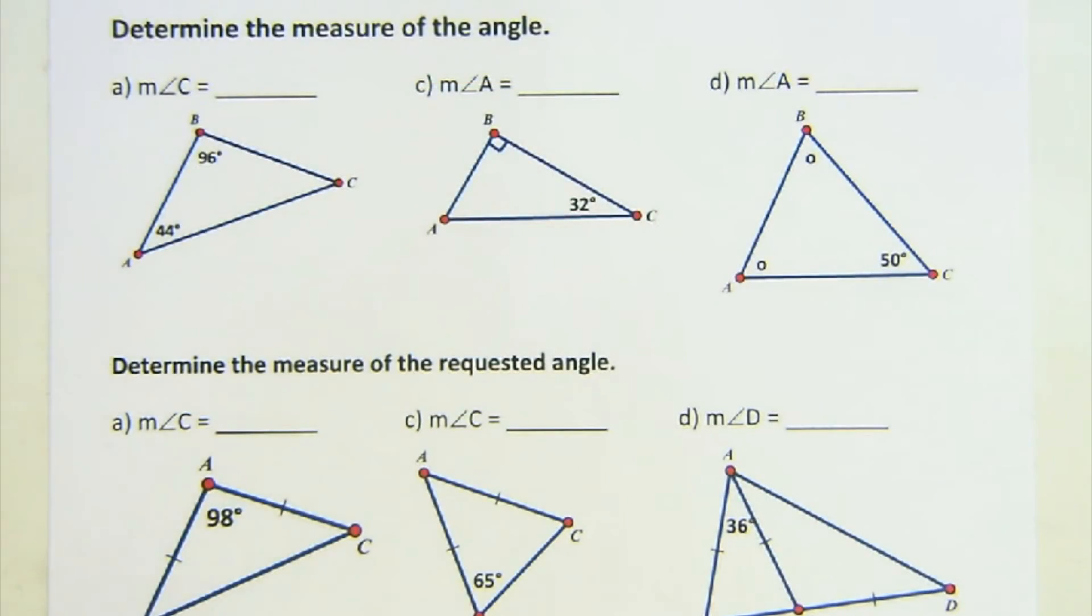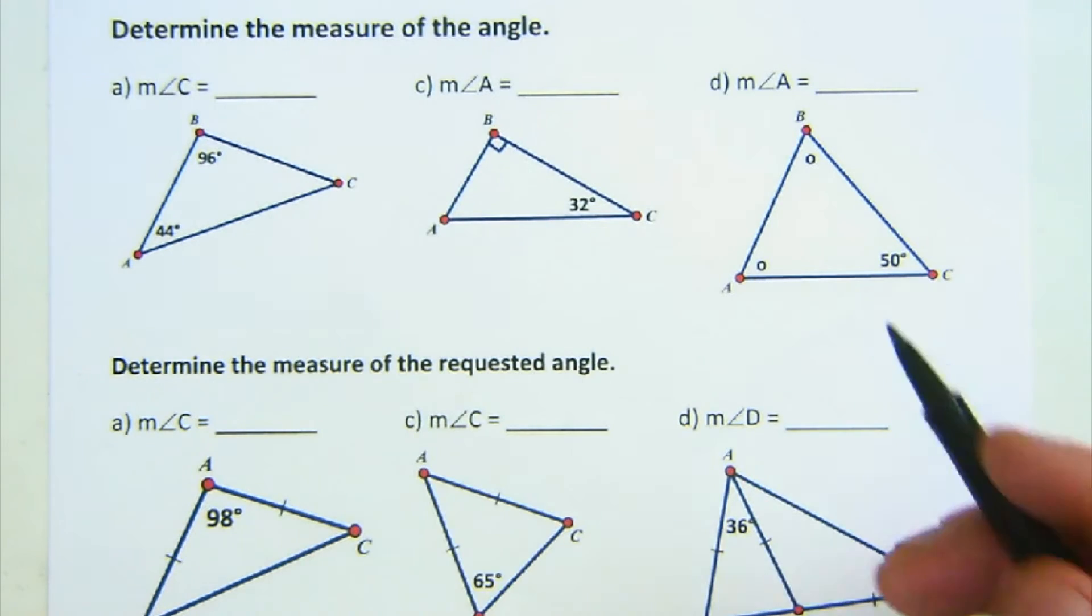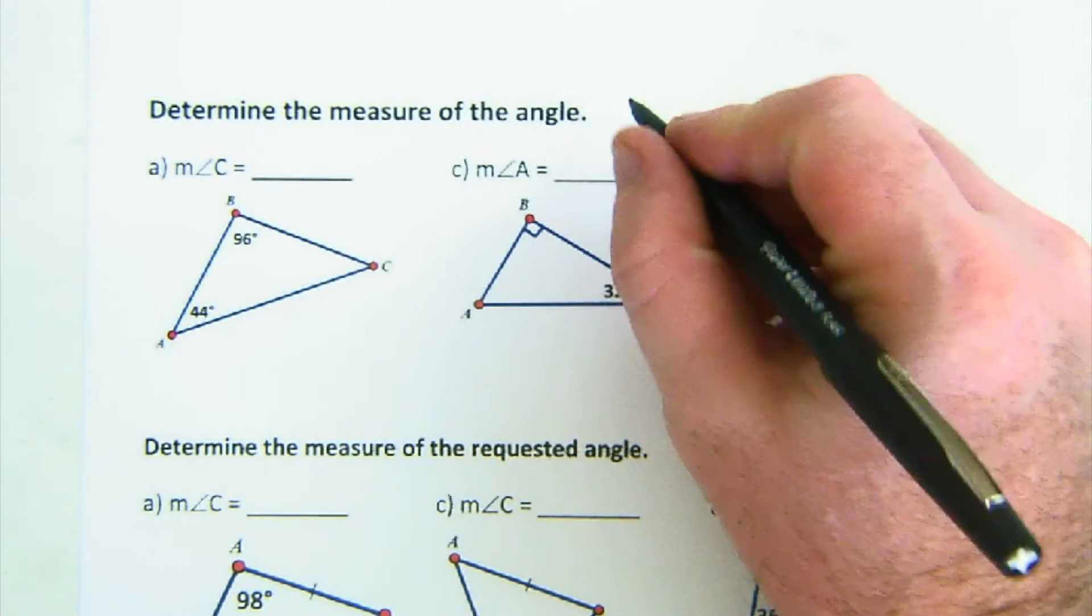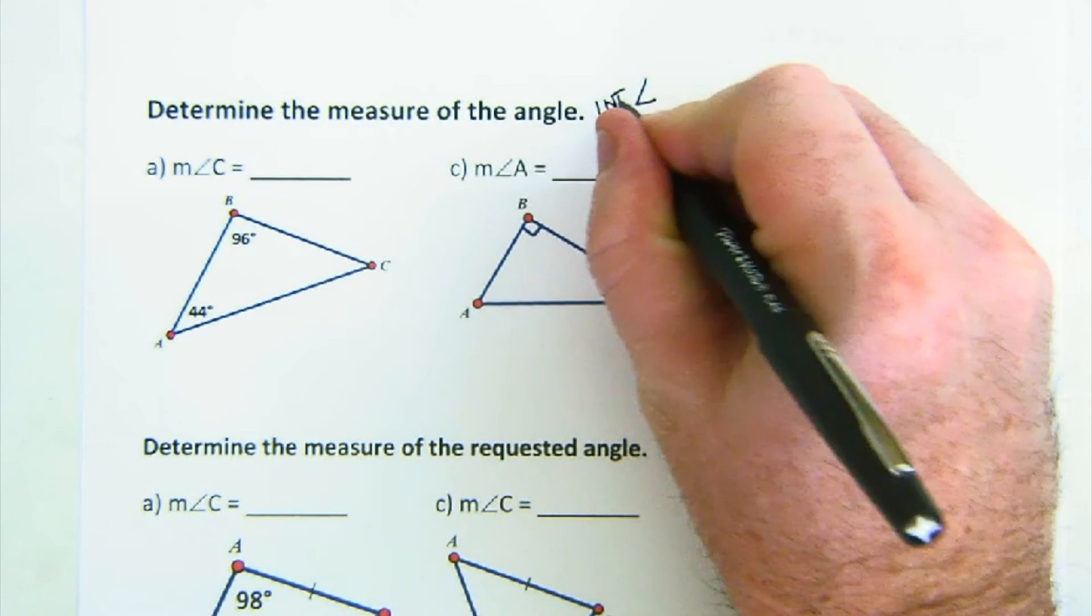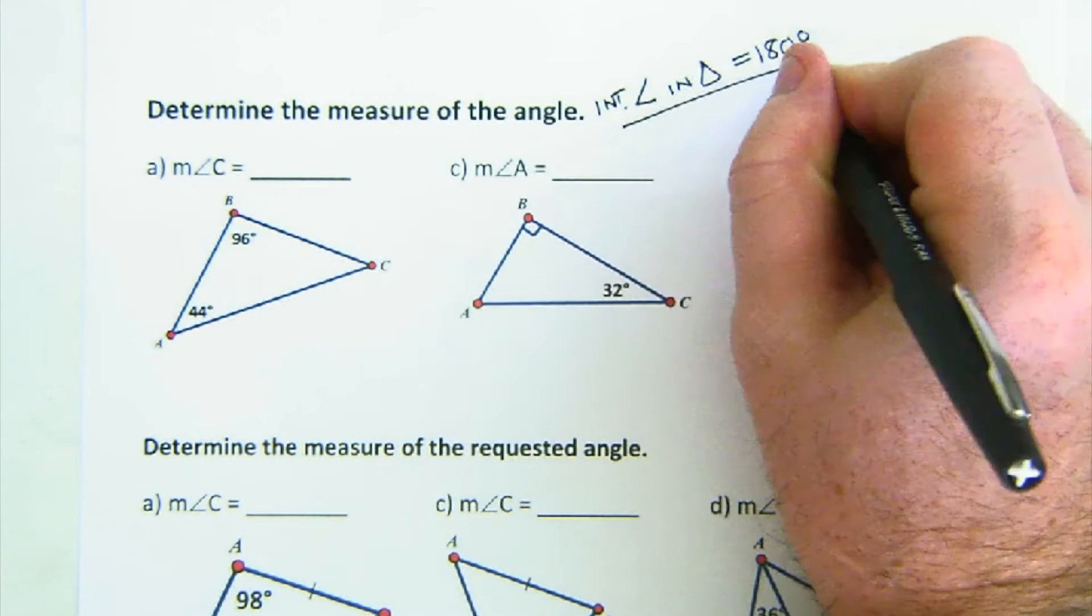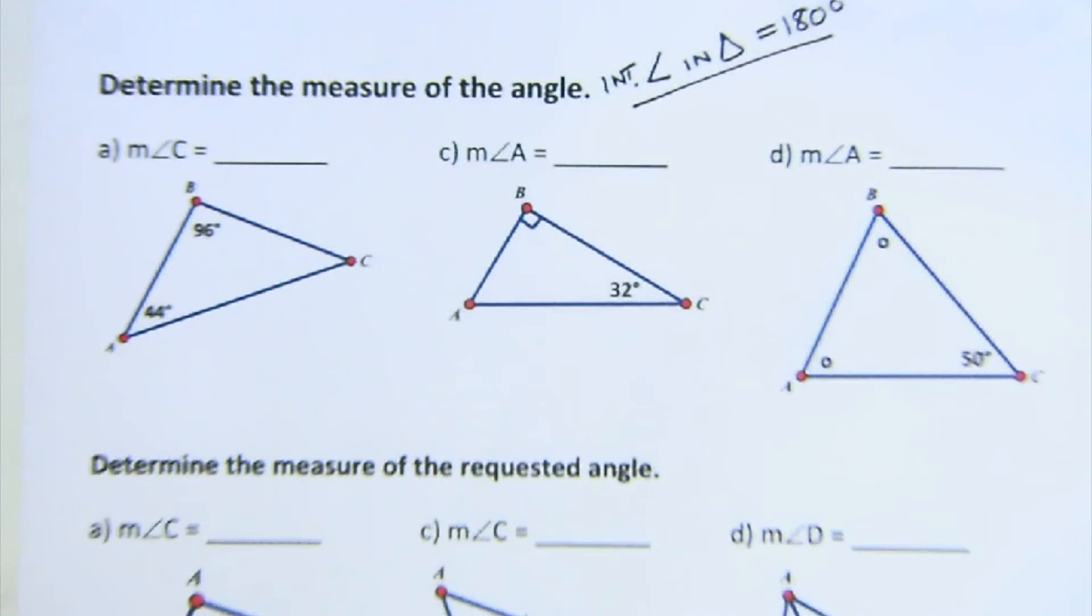So while the intro was fairly abstract about where we prove these or establish these relationships, the worksheet itself in this case is quite straightforward where it's just asking you to use those properties. So one of the things that you and I established was that the angles, the interior angles in a triangle all add up to 180 degrees. And so using that idea, we can do some nice math here.